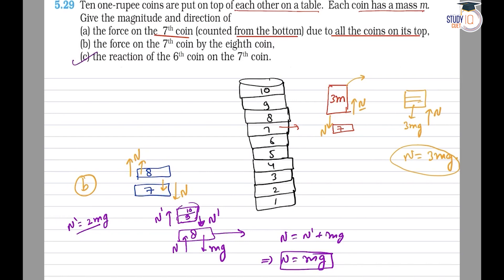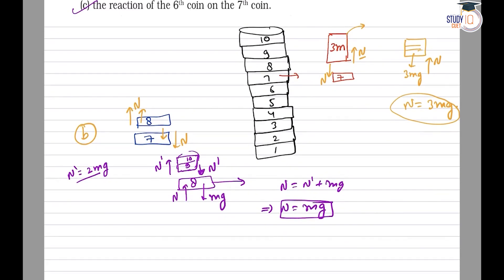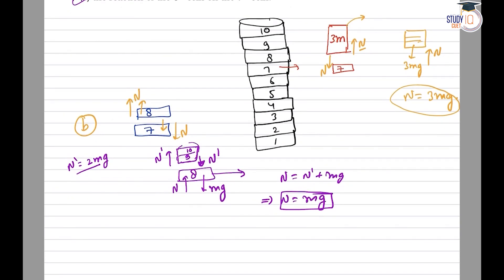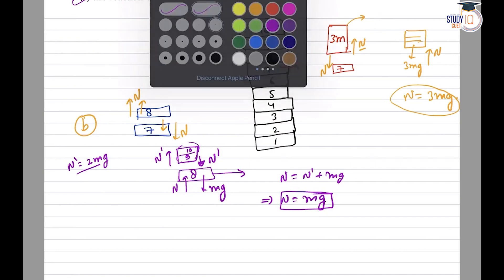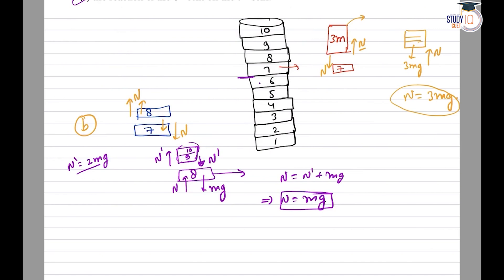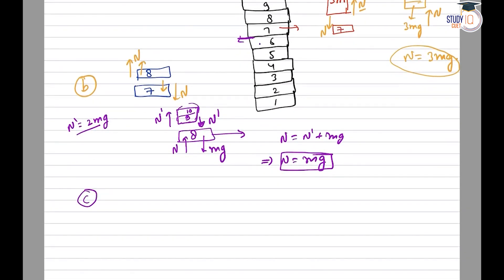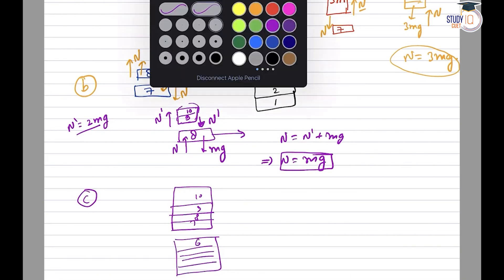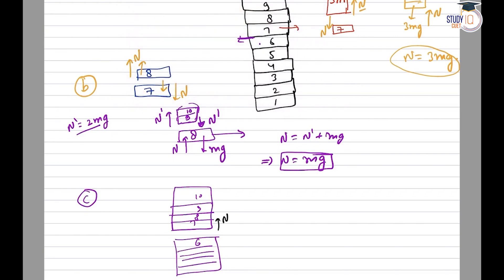Now the last part, Part C: the reaction of the sixth coin on the seventh coin. We need to find the normal force between the sixth and seventh coins. To do this, consider the system of coins seven, eight, nine, and ten together. This complete system is at rest, so the upward force is normal and the downward force is 4mg. Setting net force to zero: N is equal to 4mg.